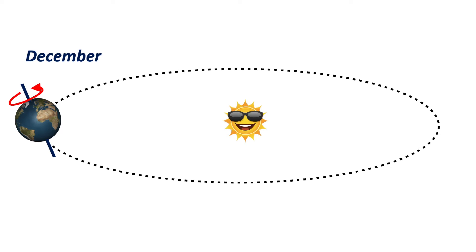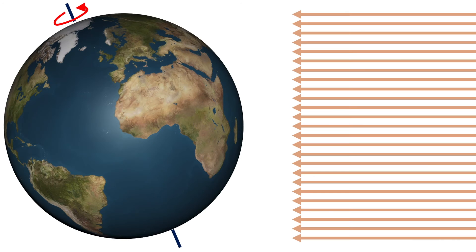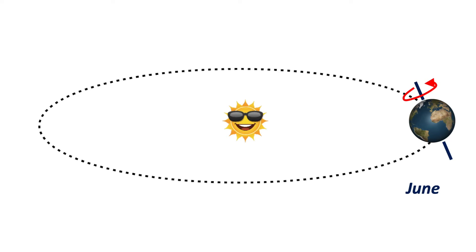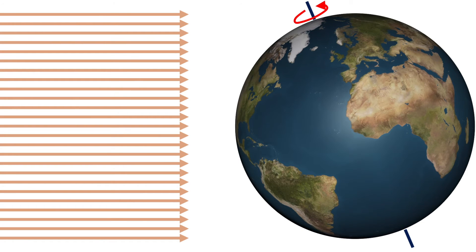In December, the southern hemisphere is tilted towards the sun, giving the southern hemisphere latitudes more solar radiation and northern latitudes less, which gives us southern summer and northern winter. Six months later in June, the northern hemisphere is tilted towards the sun, allowing higher northern latitudes to receive more solar radiation, resulting in the southern hemisphere winter and the northern hemisphere summer.